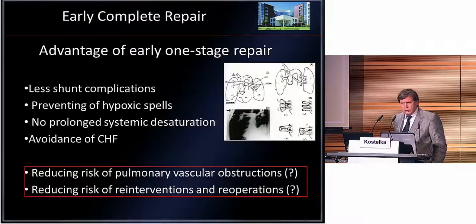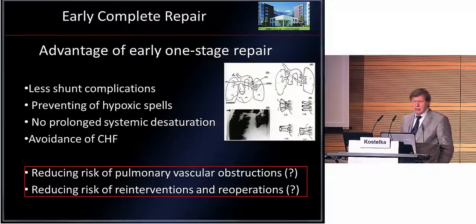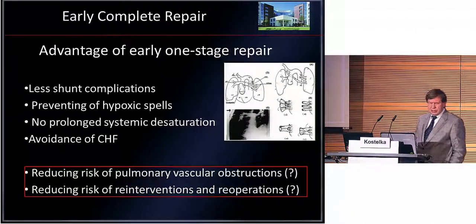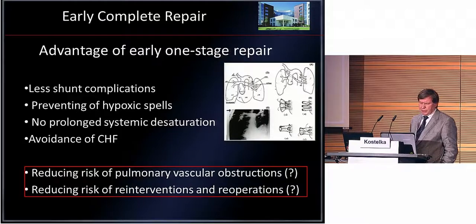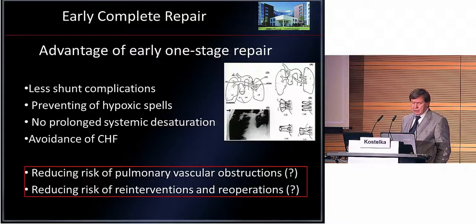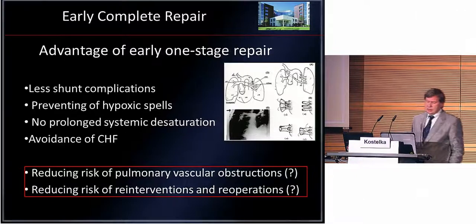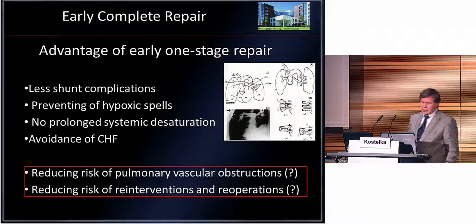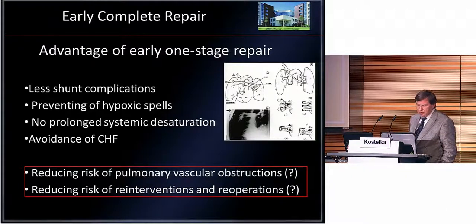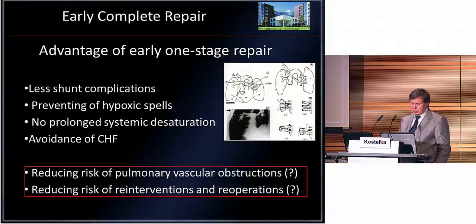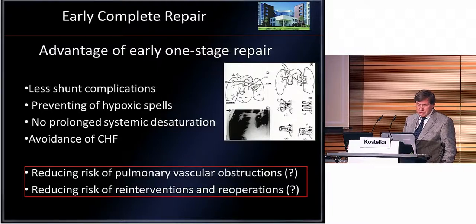What should be the advantages of early one-stage repair? Less shunt complications, preventing hypoxic spells in patients with obstructive major pulmonary arteries or small pulmonary arteries, no prolonged systemic desaturation, in some patients avoidance of congestive heart failure, and the aim of reducing risk of pulmonary vascular obstruction and reducing risk of re-intervention or reoperations. And we know nowadays that is not fully achievable.